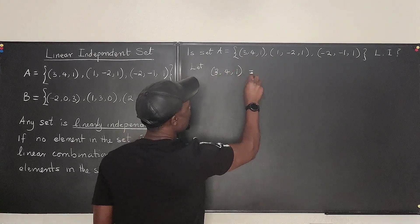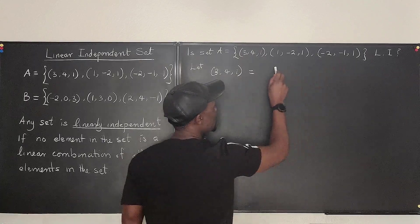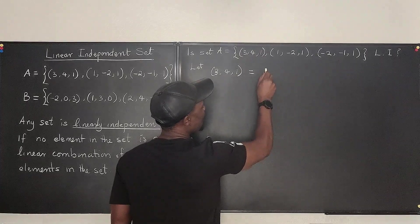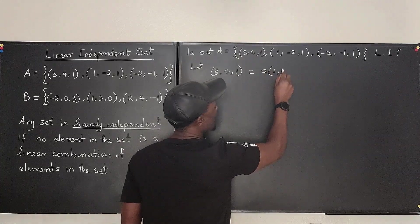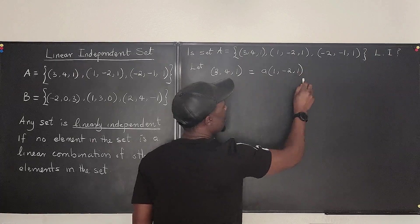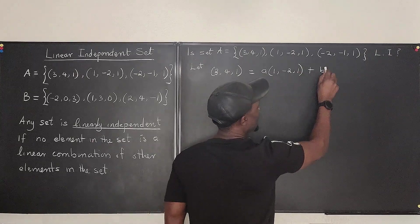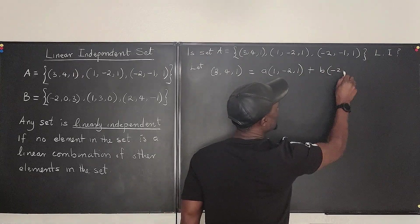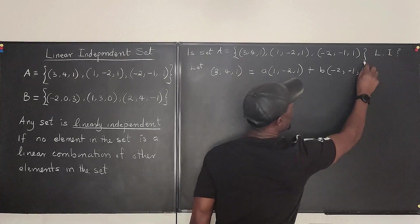So we would say that let the first one, which is (3, 4, 1), be a linear combination of these two, which means I can multiply this by A, (1, -2, 1), plus I multiply this by B, (-2, -1, 1). Okay, so this is what I get.